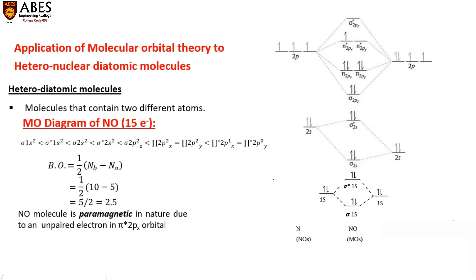For NO, sigma 2pz fills first, then pi 2px and pi 2py. The difference here is that NO is a heteronuclear diatomic molecule containing nitrogen and oxygen. Since the electronegativity of oxygen is greater than nitrogen, oxygen stays in the lower energy state — higher electronegativity means lower potential energy.